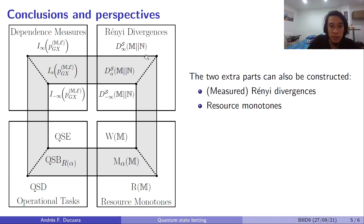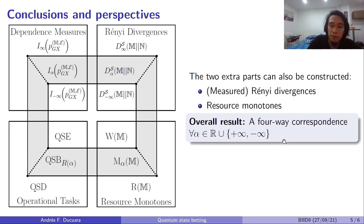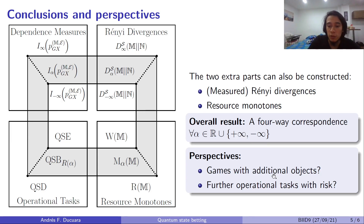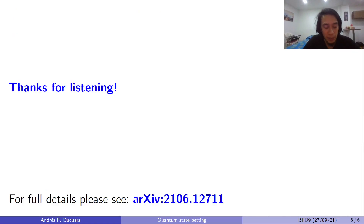In our article, we also address Rényi divergences and resource monotones, and therefore overall we have a four-way correspondence for all alphas in the extended line of real numbers. As perspectives, it will be interesting to analyze additional games with objects different than measurements, and also additional tasks with this concept of risk. That was all — thanks for listening.